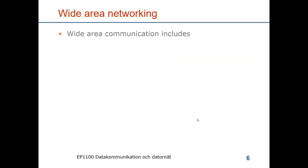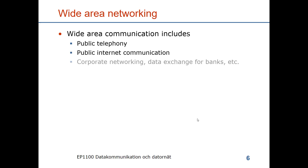Wide area network communication includes public telephony. In countries where internet infrastructure is very good, this network has been disabled, but in many countries there is still a separate telephone network. Then we have the internet itself, and a large number of corporate private networks — for example, exchange of data and transactions between banks, airline reservation systems, and many other examples.